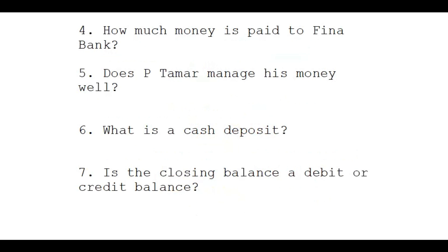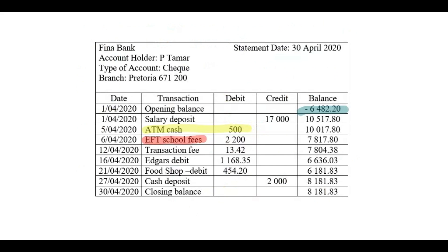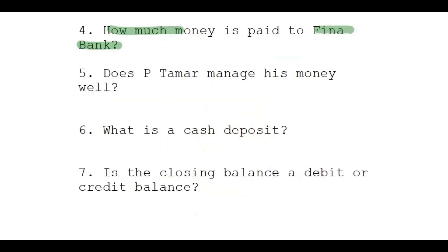How much money is paid to Fina Bank? The transaction fee of 13.42 Rand went to the bank, because that is a transaction fee. So the answer is 13 Rand 42 cents — it's not a lot, but it's a small fee.